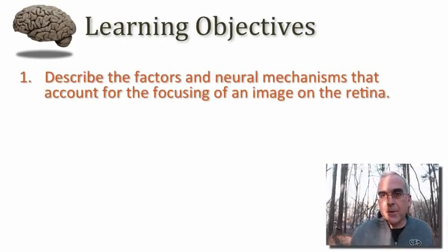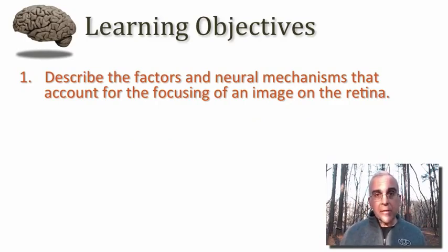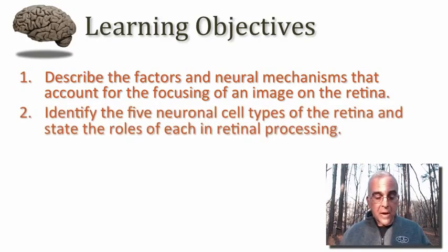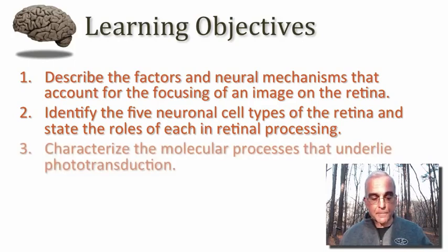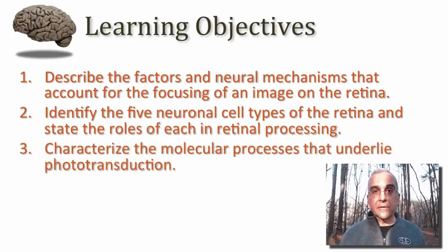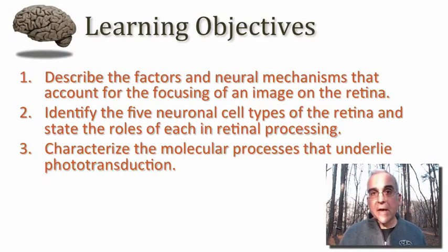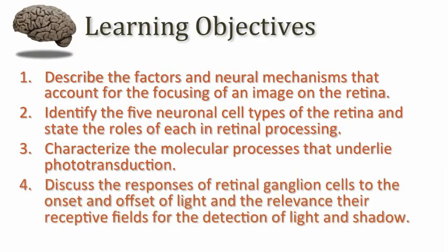Our learning objectives today begin with the factors and neural mechanisms that account for focusing an image on the retina — I want you to be able to describe them. I want you to identify the five basic neuronal types found in the retina and state the roles of each in neural processing. I want you to characterize the molecular processes underlying phototransduction, and discuss the responses of retinal ganglion cells to the onset and offset of light and the relevance of receptive fields for detection of light and shadow.